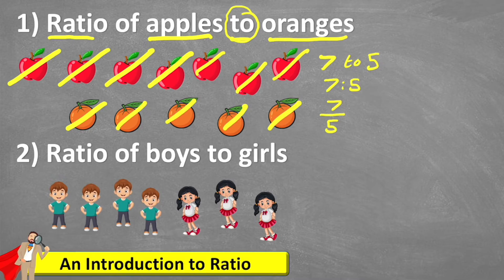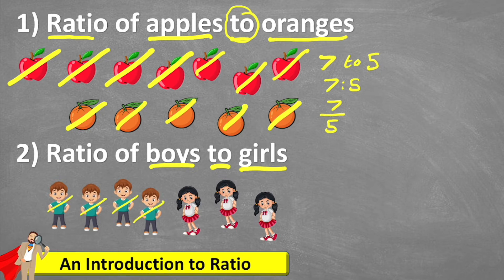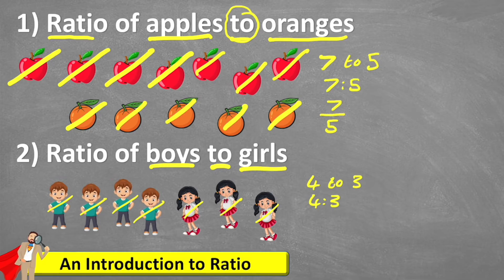Let's have a look at this second example. This one says the ratio of boys to girls. I'm going to look at the 3 different ways that I can show this. I can see that I have 1, 2, 3, 4 boys. So I have 4 to how many girls? 1, 2, 3. So I could show it as 4 to 3, or I could put 4 colon 3, or I could write 4 over 3.